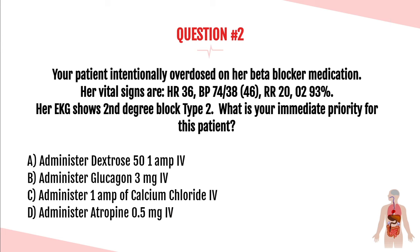Question number two. Your patient intentionally overdosed on her beta blocker medication. Her vital signs are a heart rate of 36, blood pressure of 74 over 38 with a MAP of 46, respiratory rate of 20, and an O2 sat of 93%. Her EKG shows second degree block type 2. What is your immediate priority? Is it A, administer dextrose 50 1 amp IV; B, administer glucagon 3 mg IV; C, administer 1 amp of calcium chloride IV; or D, administer atropine 0.5 mg IV?